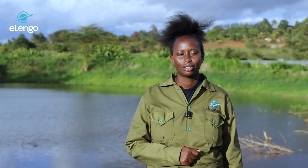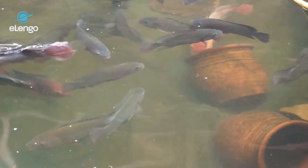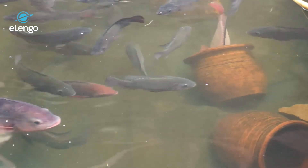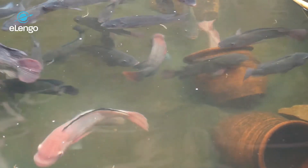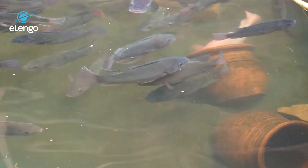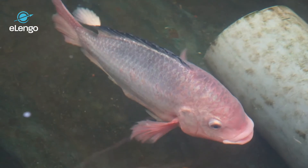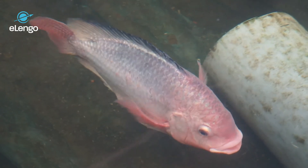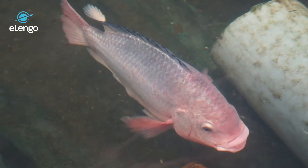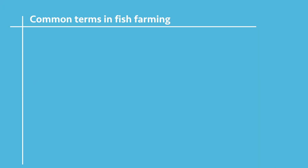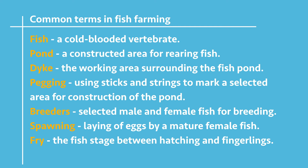Let us now talk about common terms in fish farming. A fish is a cold-blooded vertebrate — cold-blooded means temperatures are affected by outside climatic conditions, and a vertebrate is an animal with a backbone. A pond is a constructed area for the rearing of fish with the right measurements.